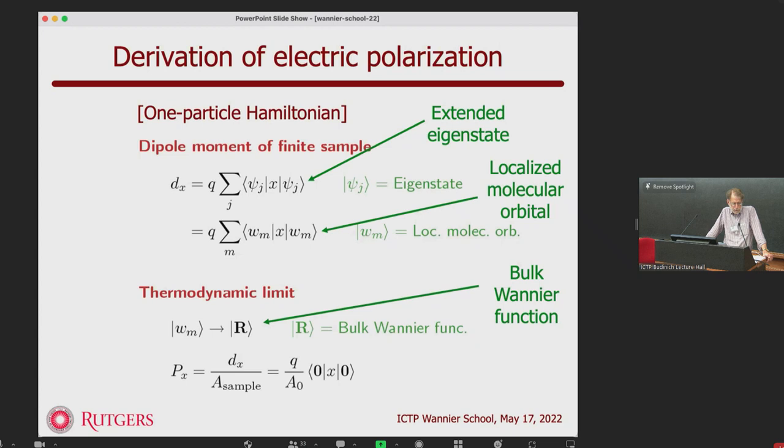So let me start by setting up the problem of orbital magnetization, by analogy with a toy derivation of electric polarization. This is not the derivation that I really prefer because it doesn't discuss orbitals or adiabatic currents, which I think is the proper way of doing it, but here's the idea.